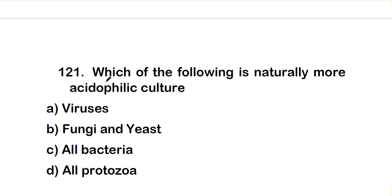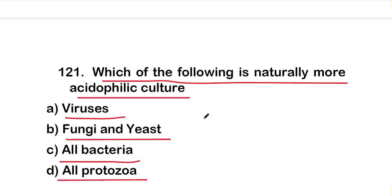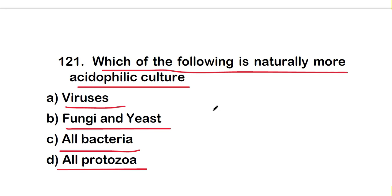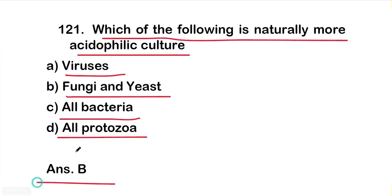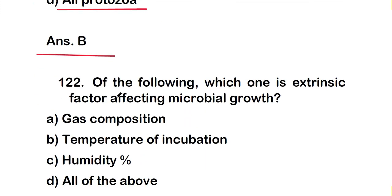Question number 121: Which of the following is naturally more acidophilic in acidophilic culture? Option A: viruses, Option B: fungi and yeast, Option C: all bacteria, Option D: all protozoa. The right answer is Option B — fungi and yeast are naturally more acidophilic.